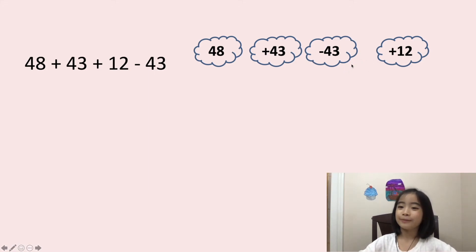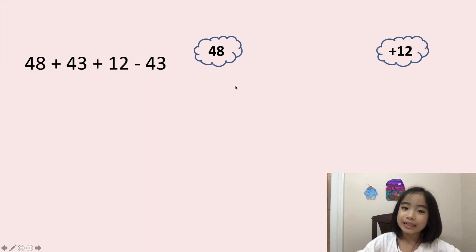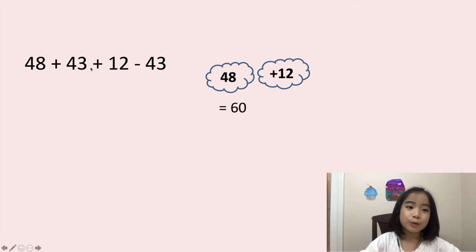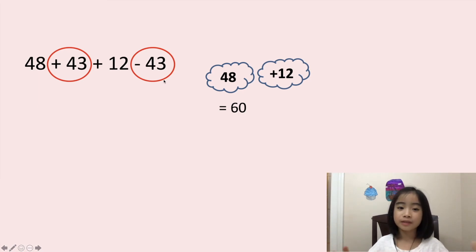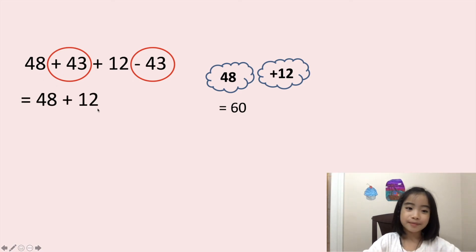So it's like doing nothing, so we can take these two away. Now let's continue the rest of the numbers. It's 48 plus 12 equals 60. So when you are adding a number then subtracting the same number, they cancel each other. It's called canceling. Then we can continue with the rest of the numbers. 48 plus 12 equals 60.